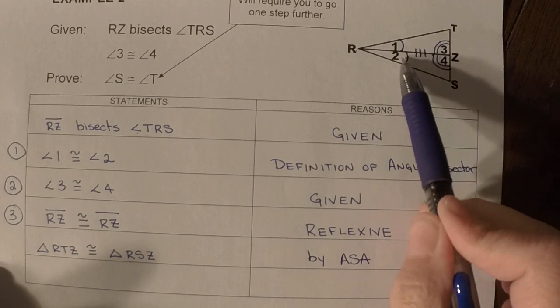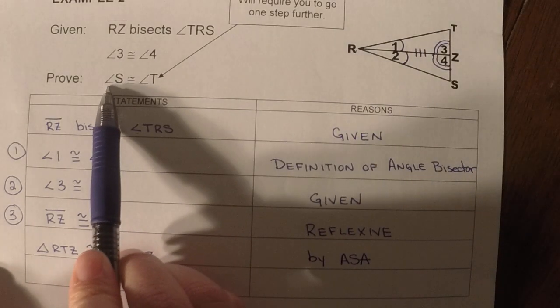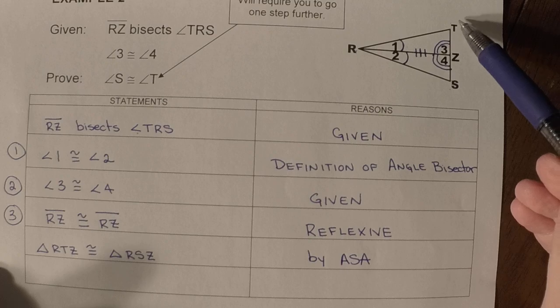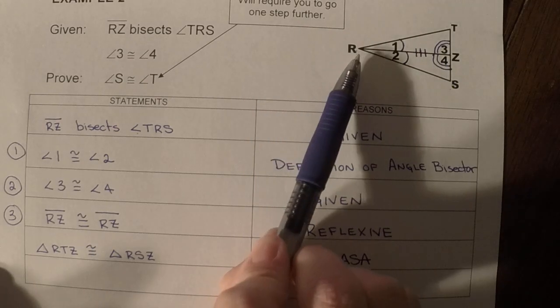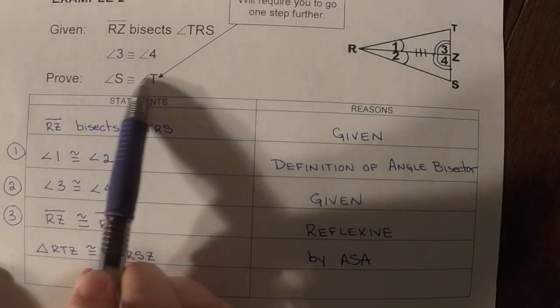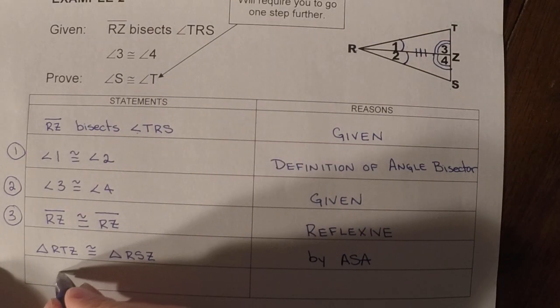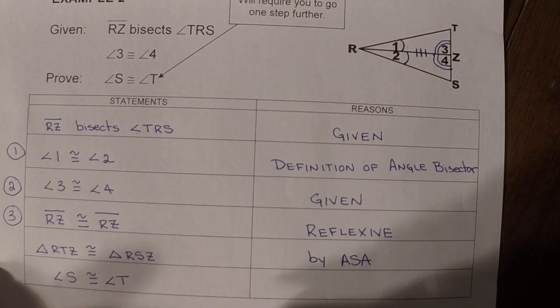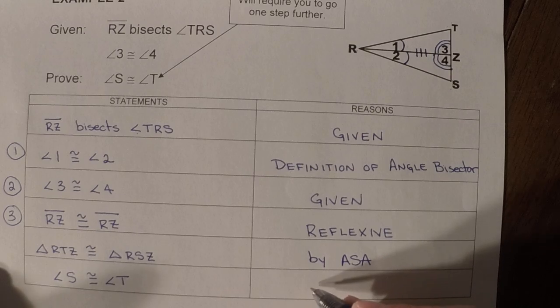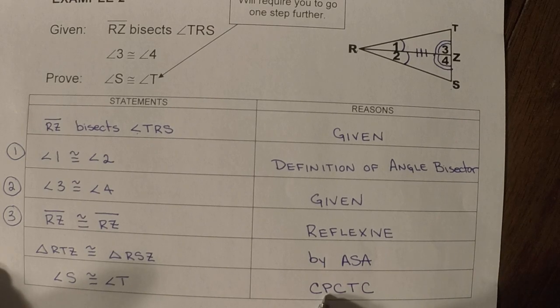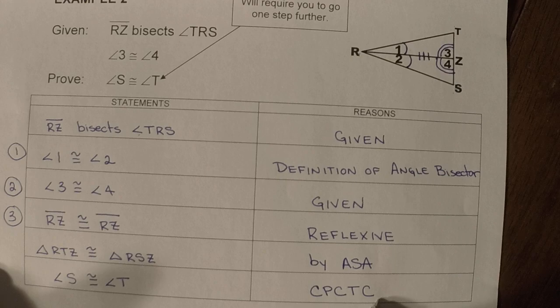So now that I know the triangles are congruent, can I say that S is congruent to T? Absolutely. Because if the triangles are congruent, then these corresponding angles are congruent. I could also prove that RT was congruent to RS or that SZ was congruent to TZ. Whatever this last one is, once we know the triangles are congruent, we can now state any of the three other congruencies. So angle S is congruent to angle T, and then we would say CPCTC.